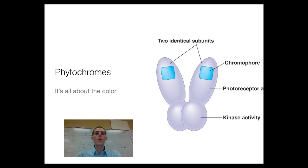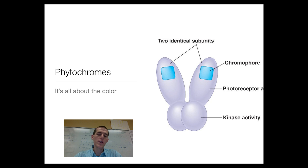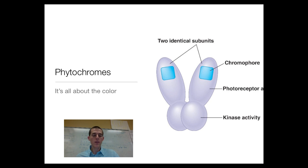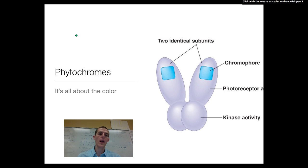Before we get into talking about how plants respond to light, we need to talk about the mechanism by which plants respond to light. Plants have these interesting protein complexes called phytochromes. Scientists have long known that plants respond to different colors of light, and that's called an action spectrum.